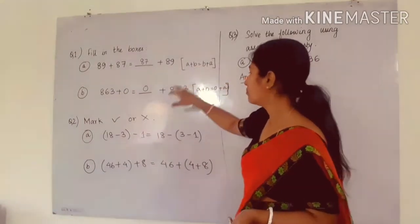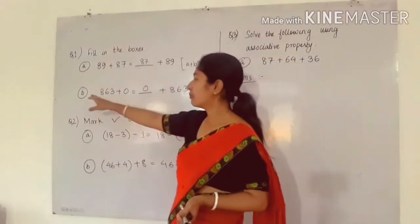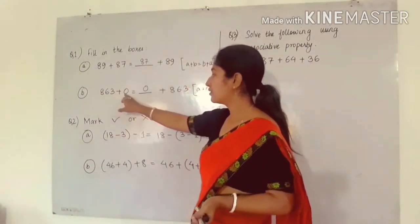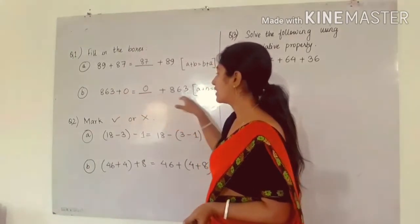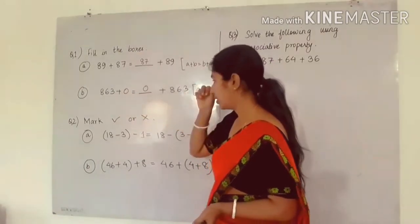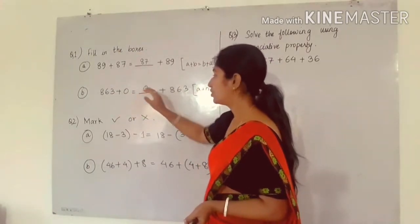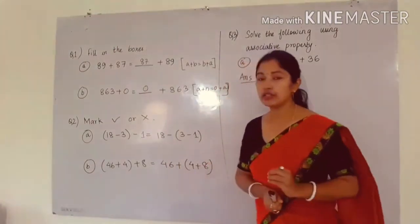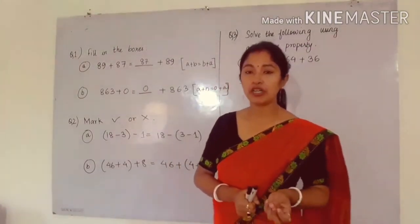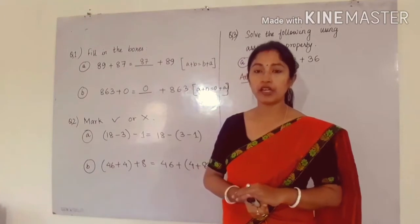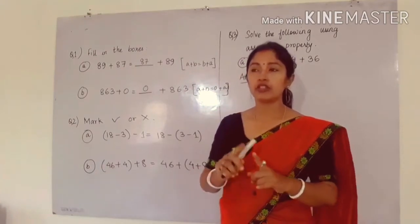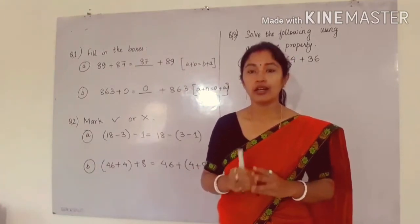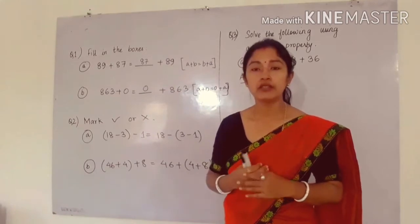Similarly, come to question number B. In question number B, 863 plus 0 is equal to dash plus 863. So in the dash we have to put 0. We can say that we are using two properties. First is commutative property of addition, because whenever we change the order, the answer will remain the same.